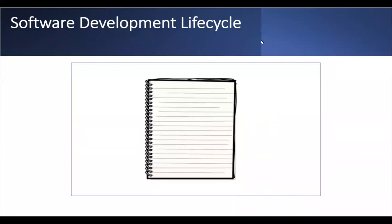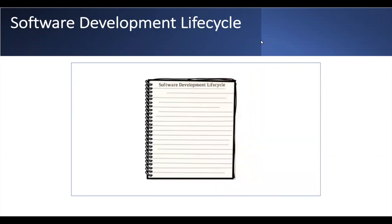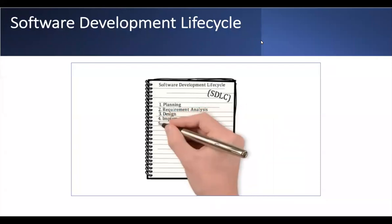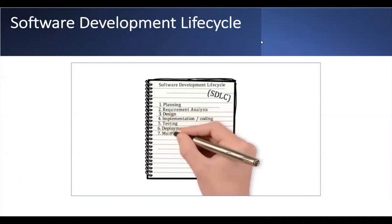In order to understand what a software tester or quality assurance analyst does, you first need to understand the process by which software is conceptualized, developed, and maintained. This process is known as the Software Development Life Cycle, or SDLC. There are seven key phases: phase one planning, phase two requirement analysis, phase three design, phase four implementation and coding, phase five testing, phase six deployment, and phase seven maintenance.